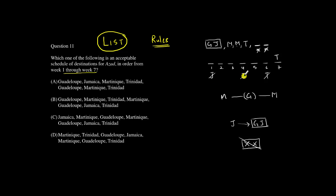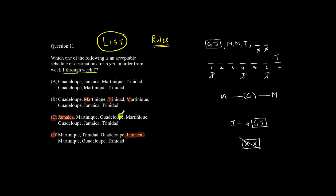We have the rule that J cannot be in position four and J cannot be in position one. Checking the answer choices, we can see J in position four in one option and J in position one in another — that eliminates options C and D. The rule that T must be in position seven is satisfied by all remaining choices. Next, between two M's we need at least one G. Checking the remaining options, we find an M followed immediately by another M with no G between them — that eliminates option B. Therefore the answer is choice A.